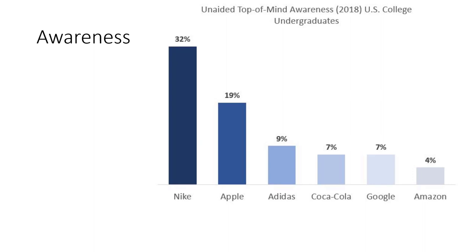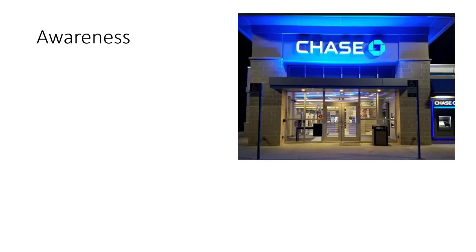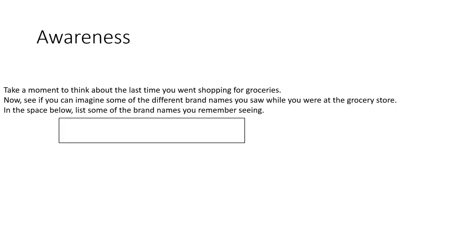Typically, unaided awareness measures have a little more context provided to them when used in marketing research. A broad product or industrial category is generally provided — for example, a question like: what is the first bank or financial service brand that pops into your mind? By the way, according to that same report, for undergraduate college students, 24% of them thought of Chase Bank.